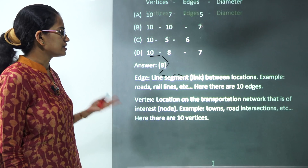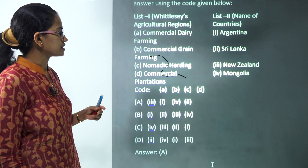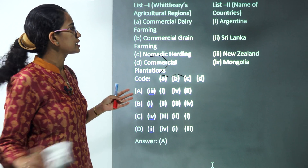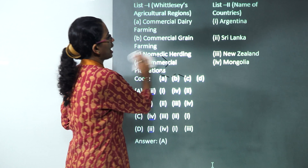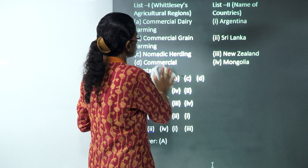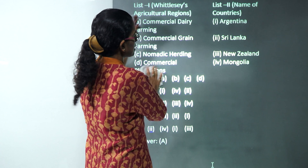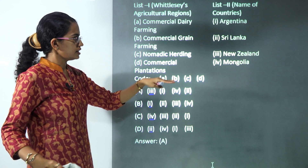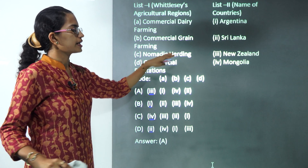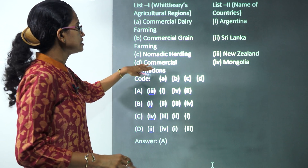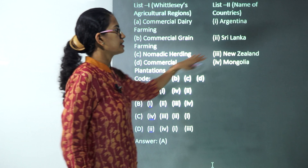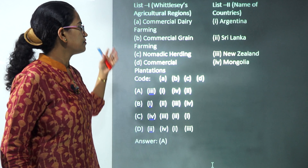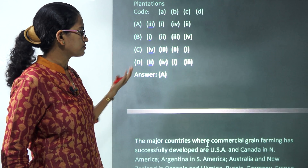The next question covers the Vitalsis agricultural regions and the countries to link. Dairy farming is related to New Zealand, commercial grain farming to Argentina, nomadic herding to Mongolia, and commercial plantations to Sri Lanka — mainly tea and coffee. Again a very direct question where you simply match up the choices.